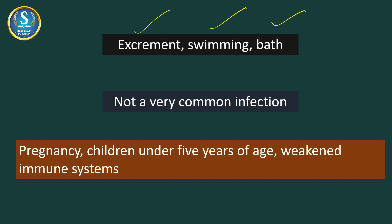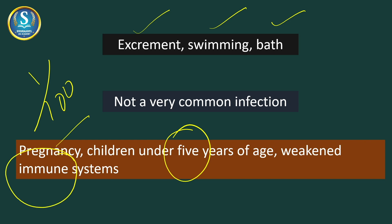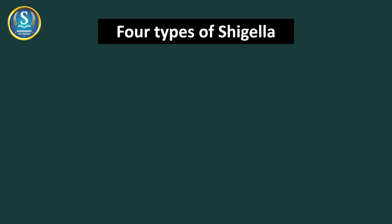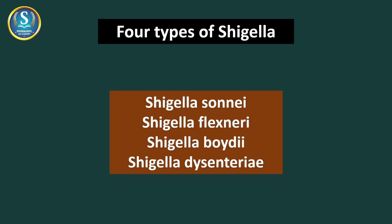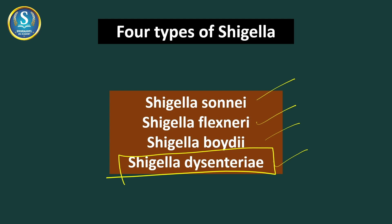Importantly, this is not a very common infection — it is very rare. Only one in 100 cases of diarrhea are caused by this Shigella bacteria. It can be exacerbated during pregnancy, in children under five years of age, or when someone has a weak immune system. Now, there are four types of Shigella bacteria: Shigella sonnei, Shigella flexneri, Shigella boydii, and Shigella dysenteriae. This fourth type, Shigella dysenteriae, causes the most severe disease because of the toxins it produces.